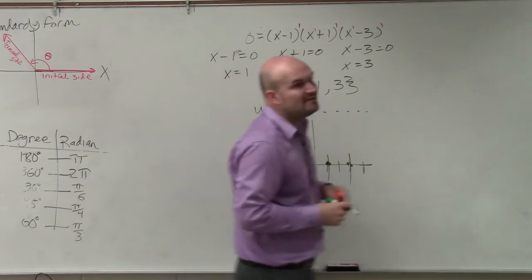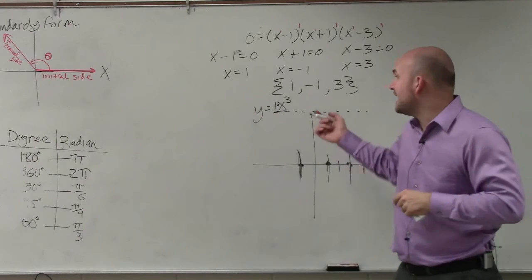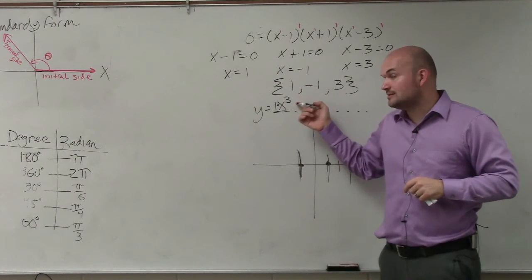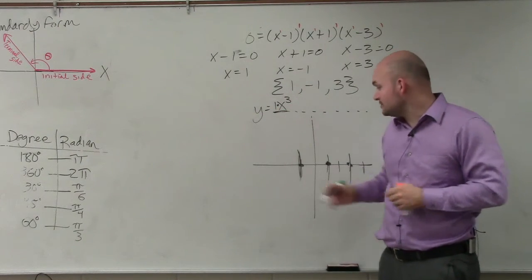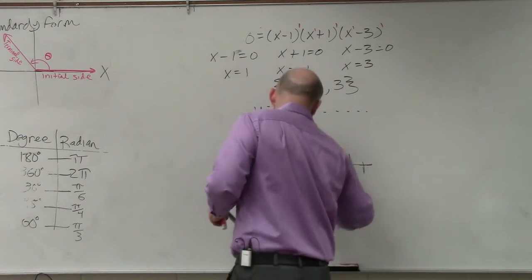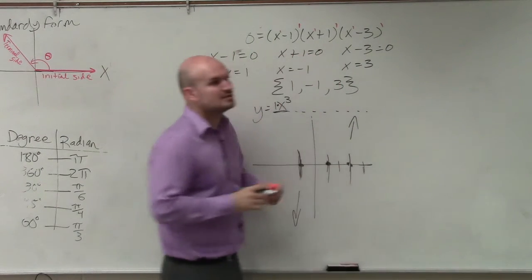So again, we have an end behavior that has an odd degree and a positive leading coefficient. That means the graph falls left, rises right, just like the last example.